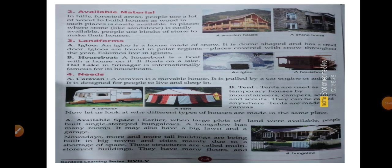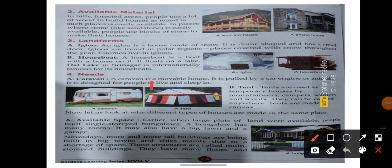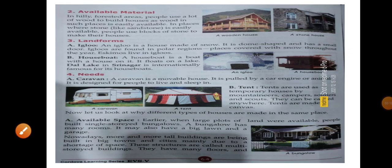Third is landforms — yani ki joh jagah hai, joh place hai, jaise ki kahan pe zyada barf hoti hai ya paani mein banana hai — us according, jaisi ki igloo. And igloo is a house made of snow. Igloo jo hai ek barf ka ghar hota hai, yani ki yeh ghar barf se bhara jaata hai. It is dome-shaped and has a small door. Dome hum bolte hain gumbad, yani ki jo round iska roof hota hai — yeh dome shape ka hota hai, gol hota hai, aur iska ek chhota sa darwaza hota hai.